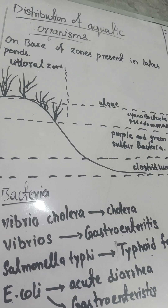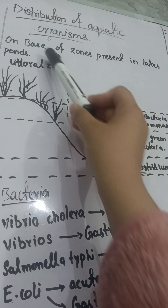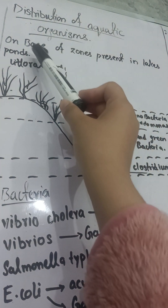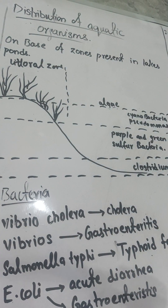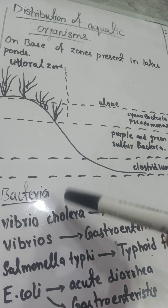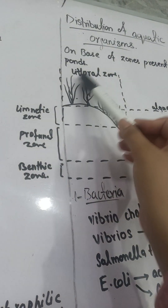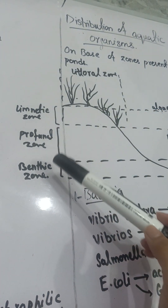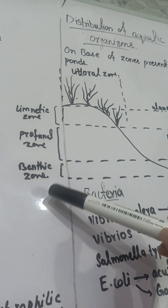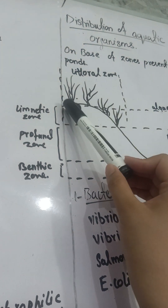Now let's discuss the distribution of aquatic organisms — how aquatic microorganisms are distributed in lakes and ponds. They are distributed based on zones present in your lake or pond. I have drawn a diagram showing these zones: the littoral zone, the limnetic zone, the profunda zone, and the benthic zone. Various kinds of organisms are present in each zone.